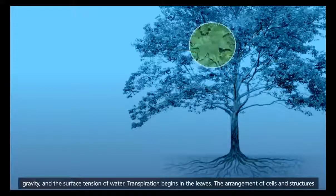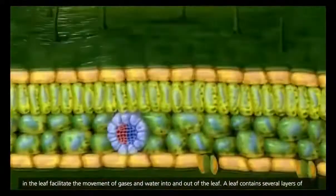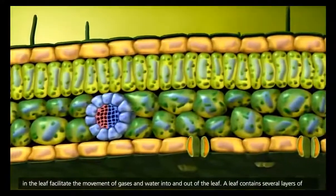Transpiration begins in the leaves. The arrangement of cells and structures in the leaf facilitate the movement of gases and water into and out of the leaf.